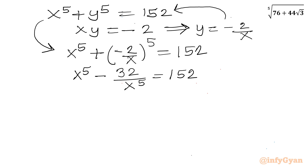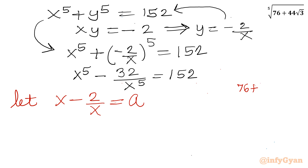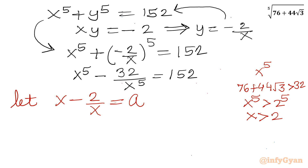Now I will consider the substitution: let x minus 2 over x equal to a. I can apply one condition on a. Since x power 5 equals 76 plus 44 root 3, which is always greater than 32, we have x power 5 greater than 2 power 5, so x is greater than 2. Once x is greater than 2, then 2/x will be less than 1, so a will be always positive.